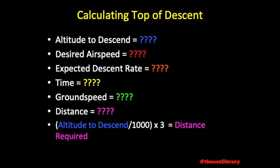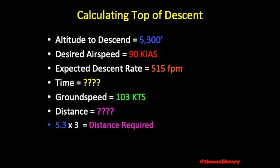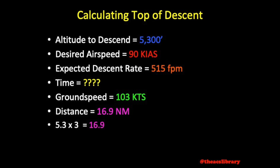Assuming most conditions remain the same as the previous problem, we plan to descend 5,300 feet from cruise altitude to traffic pattern altitude at an indicated airspeed of 90 knots, resulting in a ground speed of 103 knots just like earlier. This means we need to maintain our rate of descent at 515 feet per minute — that's 103 times 5. Once we've done the math, 5,300 divided by 1,000 is 5.3, multiplied by 3, giving us 15.9 nautical miles. We add a mile to account for our distance from the center of the runway while in the pattern, resulting in 16.9 nautical miles.